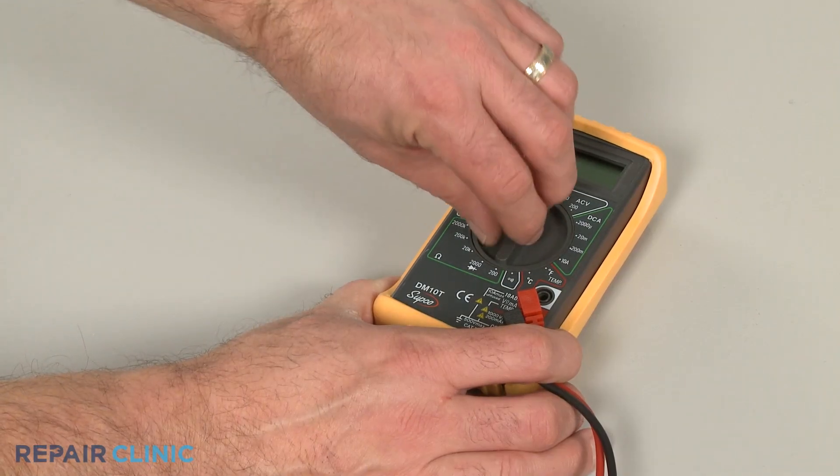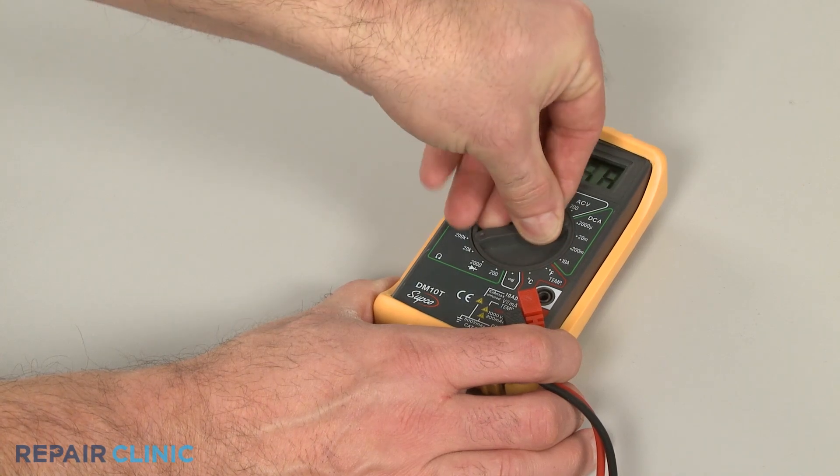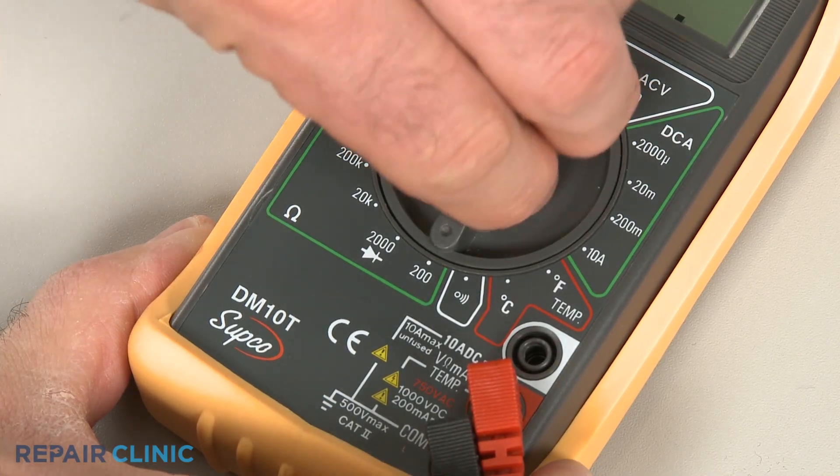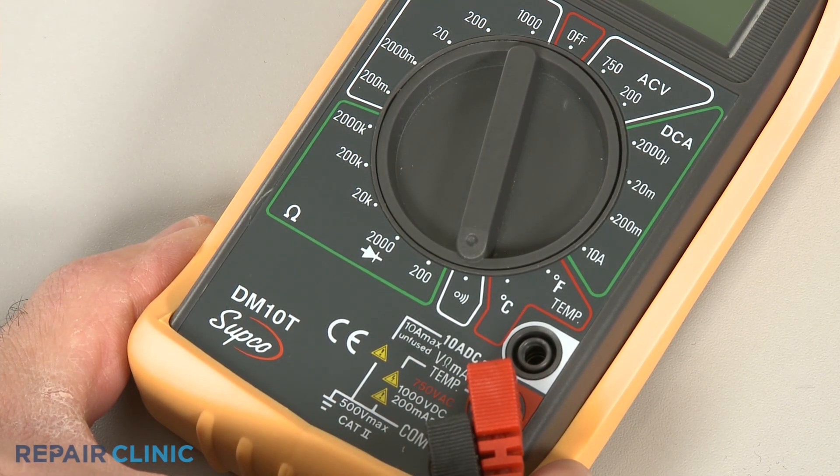When using a digital model, again rotate the dial to the lowest setting for ohms of resistance or resistance with tone if your meter has this option.